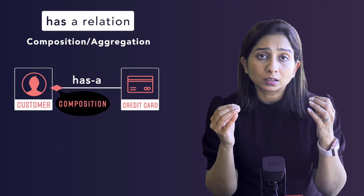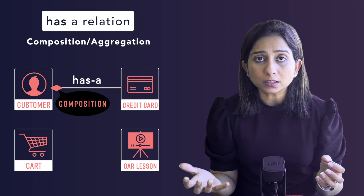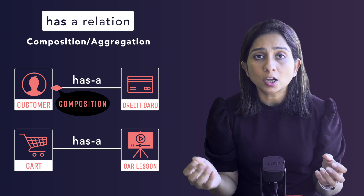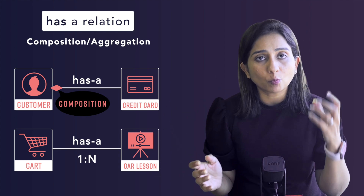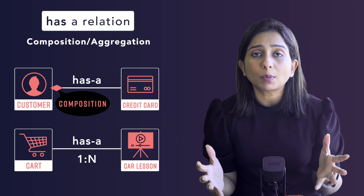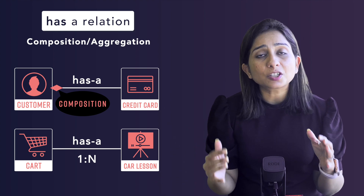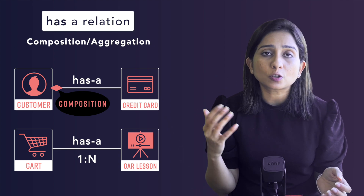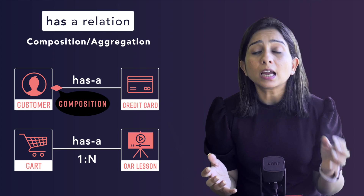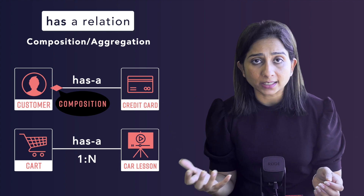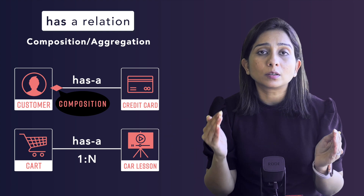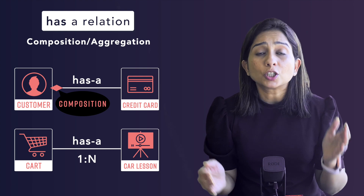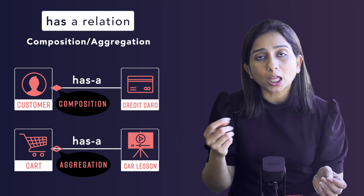Think about the class Cart and the different car lessons that can be added to the cart. One cart can have more than one class lesson, so we can show the cardinality as one-to-many. But multiple lessons can exist even without the cart — even if people are not ordering classes through the web interface, the classes still exist and people can manually go to the center and book classes. So the existence of classes does not depend on the existence of the cart. This is called aggregation, and it is another type of has-a relation.